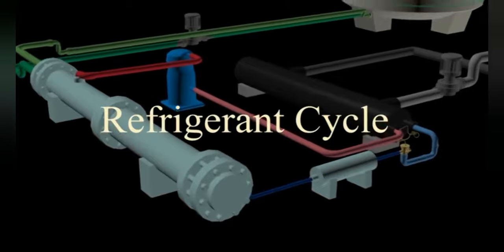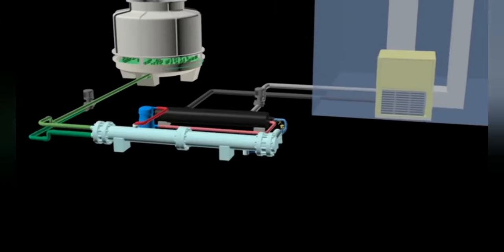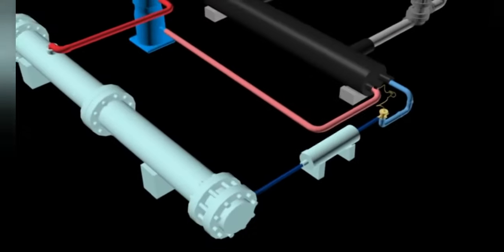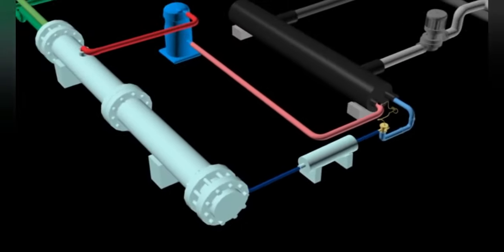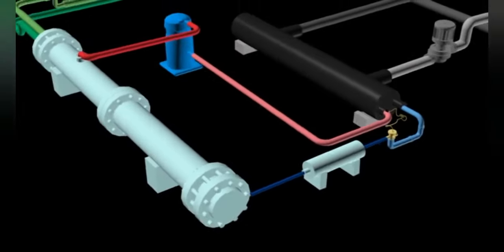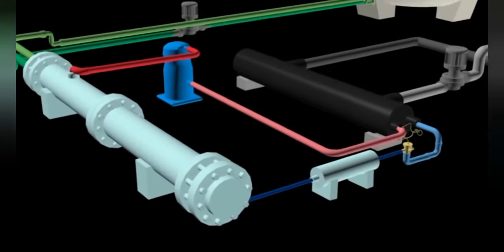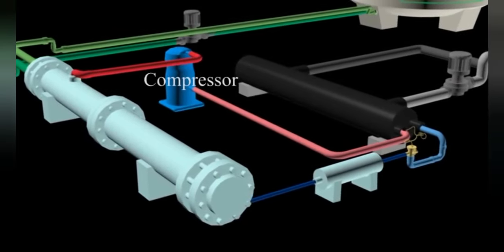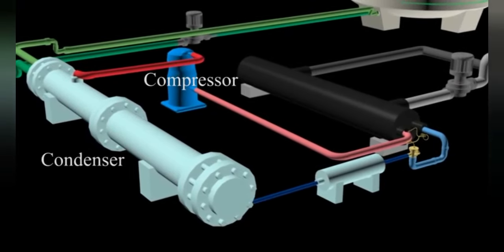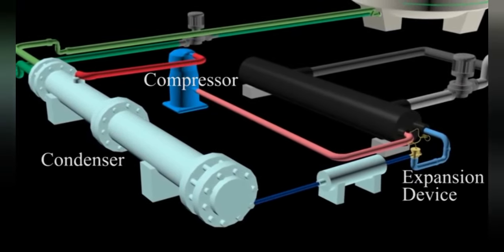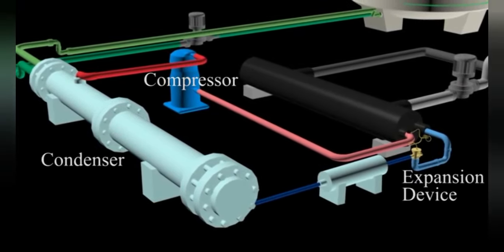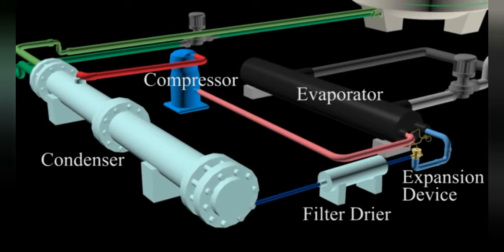The refrigerant cycle consists of four basic components: compressor, condenser, expansion device, and evaporator. An additional component called a filter dryer is also included in the system.